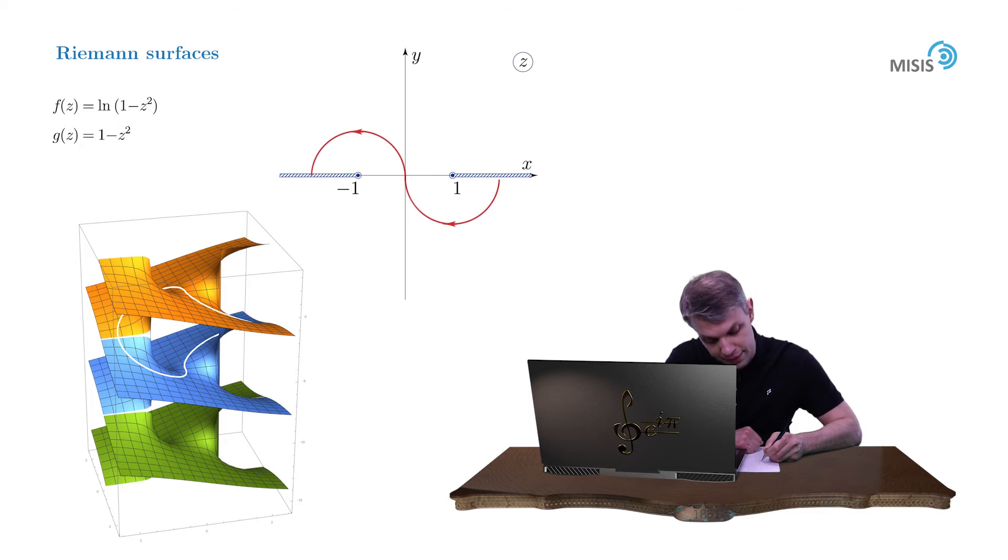Then it slips on the second sheet and starts on the lower bank of the left branch cut and ends on the upper bank of the right branch cut where it is reconnected with its start point.